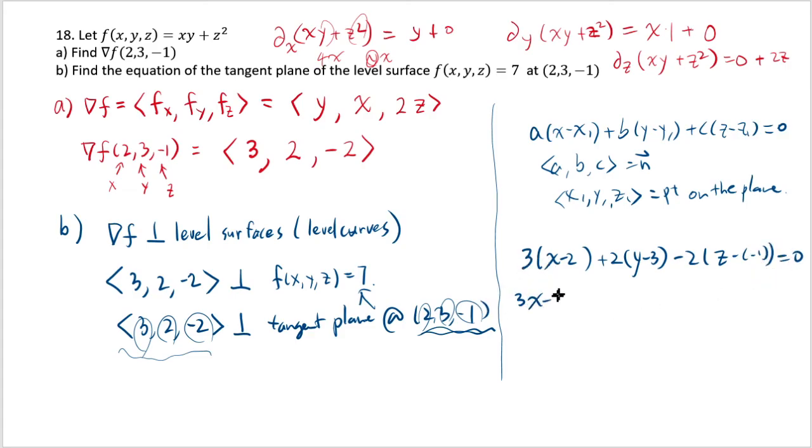So that's 3x minus 6, 2y minus 6, minus 2z minus 2 equal to 0. And therefore, you have 3x plus 2y minus 2z. If I move 6, 6, and 2 to the other side, that's 6 plus 6 plus 2, which is 14. And that's the answer.